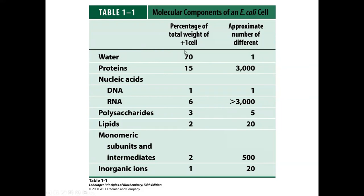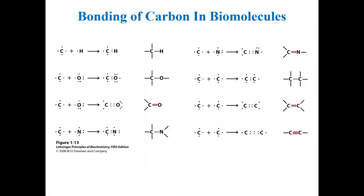Looking at the major components of E. coli cells: 70% of the total weight of an E. coli cell is water, which shouldn't be surprising. Typically, 15% of the weight is protein, and E. coli has about 3,000 proteins.